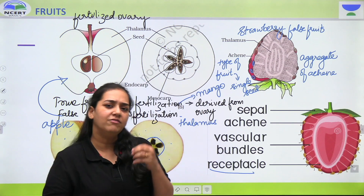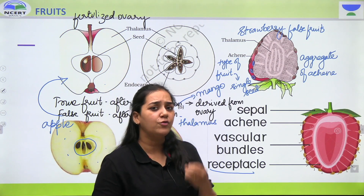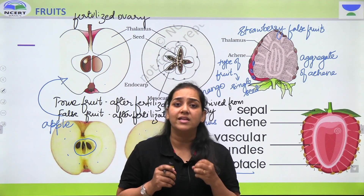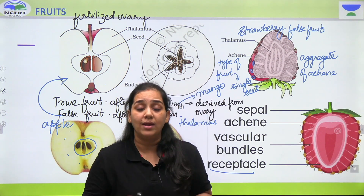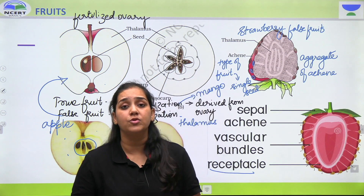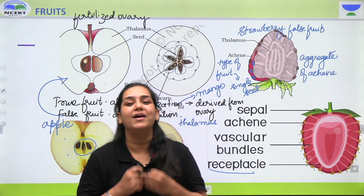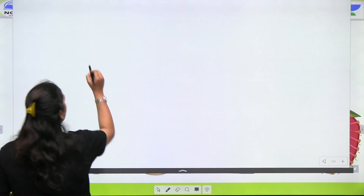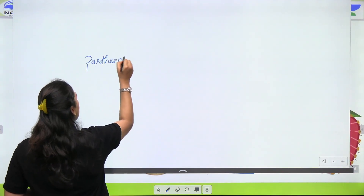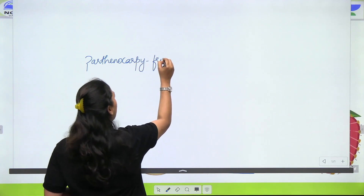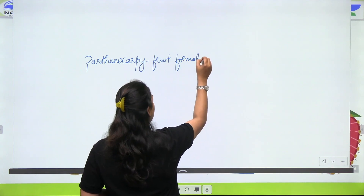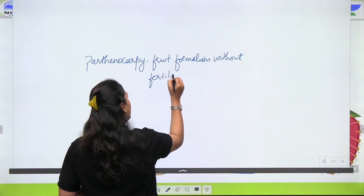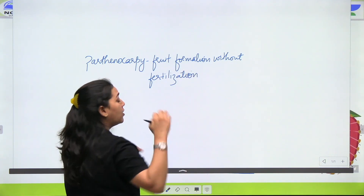Ab ek question aata hai — kya without fertilization also fruit formation dikhai dega? Will there be fruit formation without the process of fertilization? Toh answer aap kya doge — aap doge answer yes. Kyunki hamne class 11th mein plant growth and development mein padha hai ki when artificially plant hormones are applied, you can induce a process called as parthenocarpy. Toh hum uske baare mein thoda padh lete hai. What is parthenocarpy? Parthenocarpy jo hai, that is basically fruit formation without fertilization.